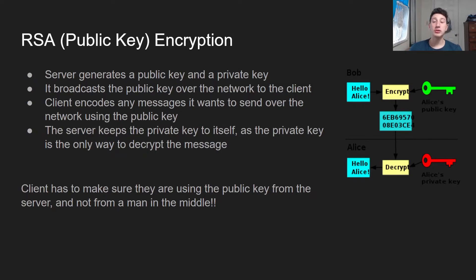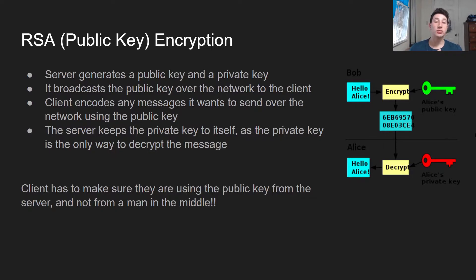In order to do this, we actually use RSA encryption, also known as public key encryption. Basically, any server that you want to communicate with has something called a public key and a private key. The public key — it doesn't really matter who has it — but you can use it to encrypt whatever data you want and send that data over the network. Only the person with the private key can go ahead and decrypt it to actually read it. The server uses their private key, and they're the only one that has it because they haven't conveyed it over the network — so even if the data were to fall into the wrong hands, it would be encrypted.